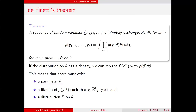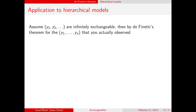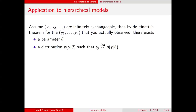So, if you assume your data are exchangeable — that is, there's no information in the indices for the random variables such that you can permute them and have the same joint probability — then you know there must be a parameter theta with some prior distribution. Applying this to hierarchical models: first, assume our data are infinitely exchangeable. Then by De Finetti's theorem, for the set you actually observed, there exists a parameter theta, a distribution for the data conditional on that parameter such that the data are conditionally independent, and some prior on theta.